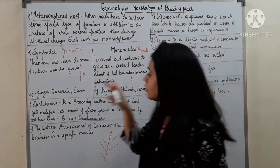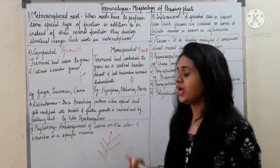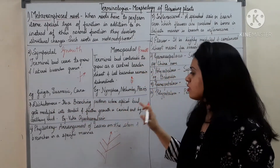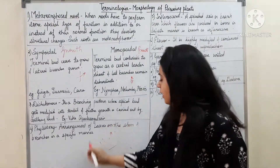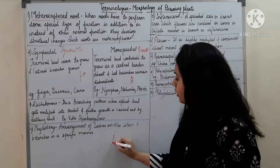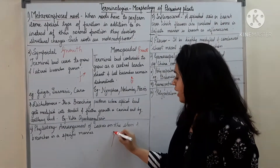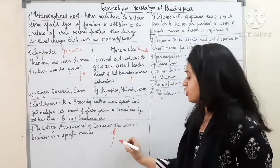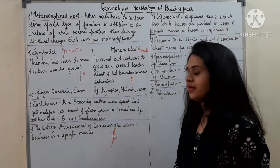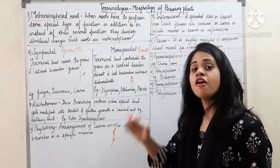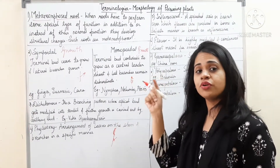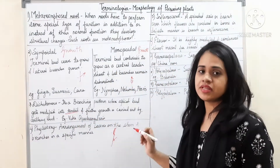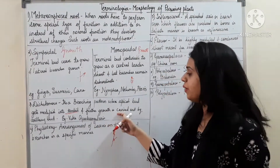Next comes dichotomous branching. What is dichotomous branching? It is a branching pattern where the apical bud gets modified into a tendril and further growth is carried out by the axillary bud. An example is a plant with a quadrangular stem.